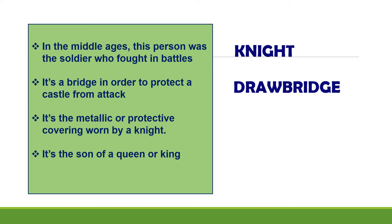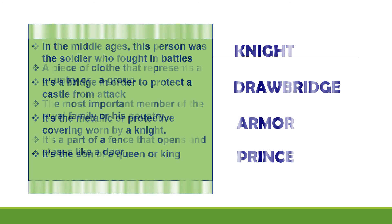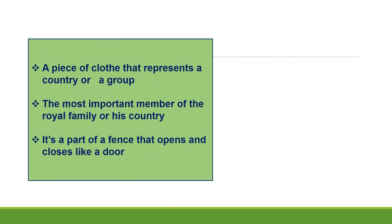It's the metallic or protective covering borne by a knight — armor. It's the son of a queen or king — prince. A piece of cloth that represents a country or a group — flag. The most important member of the royal family of his country — king. It's a part of a fence that opens and closes like a door — gate.